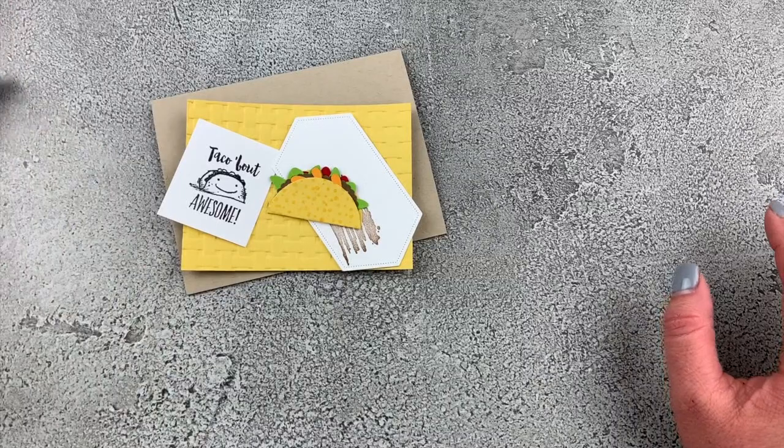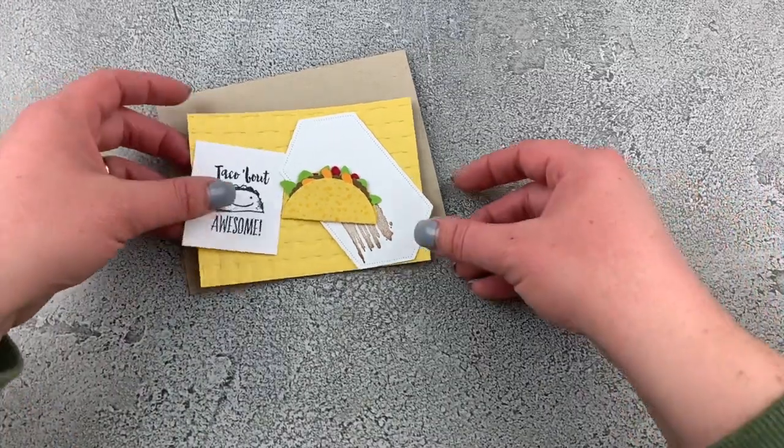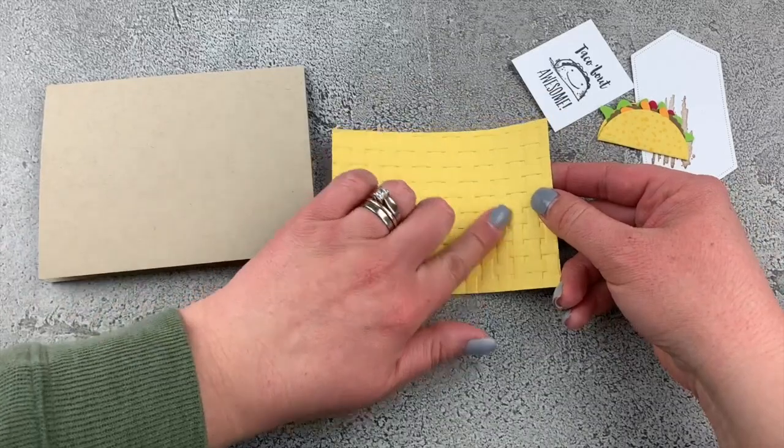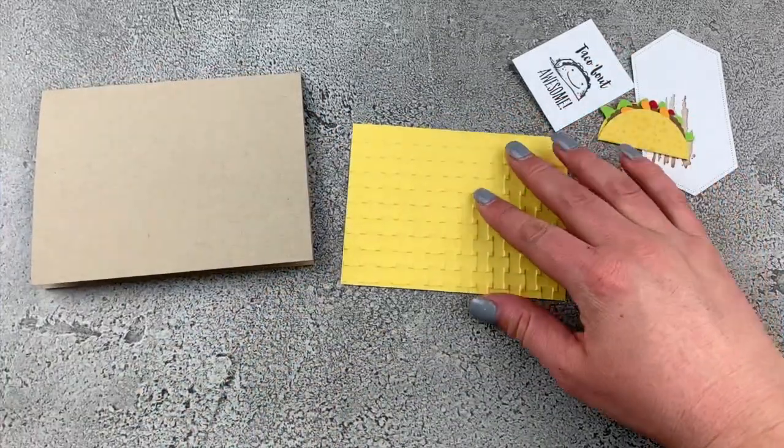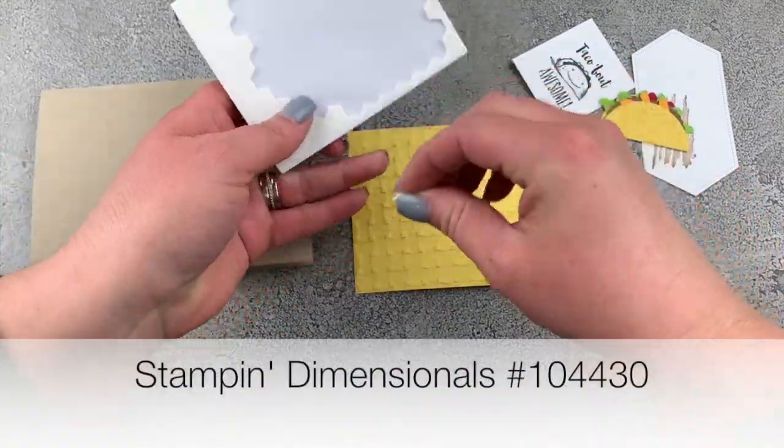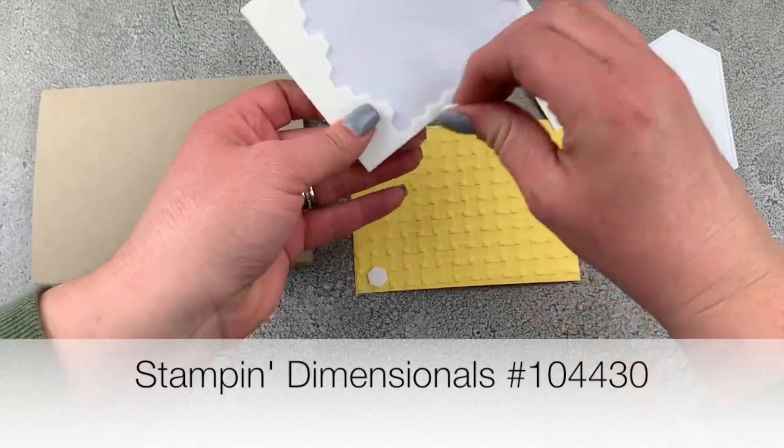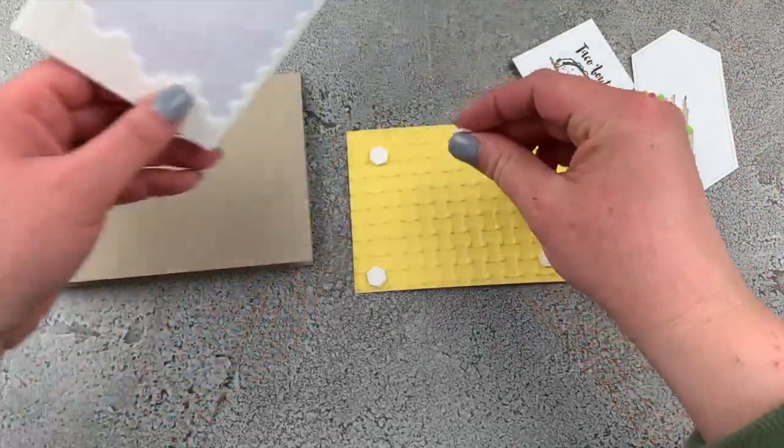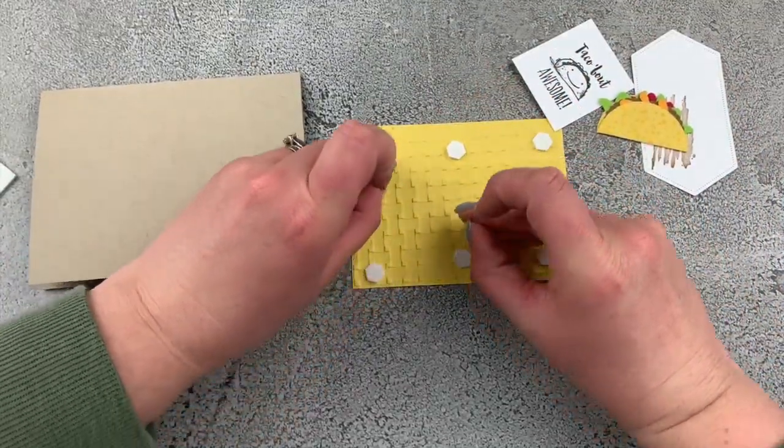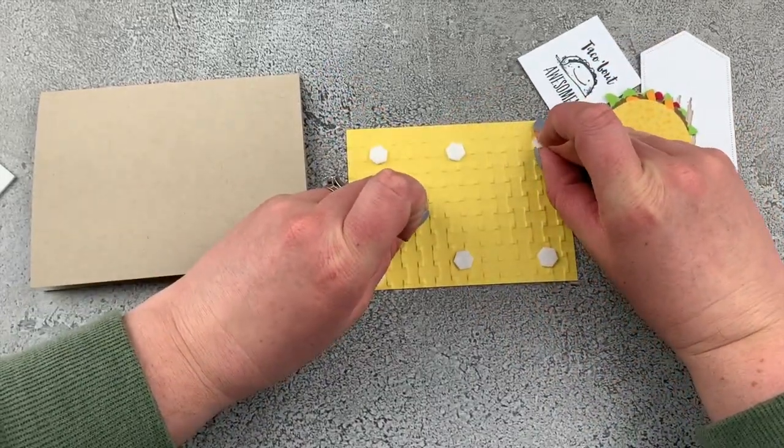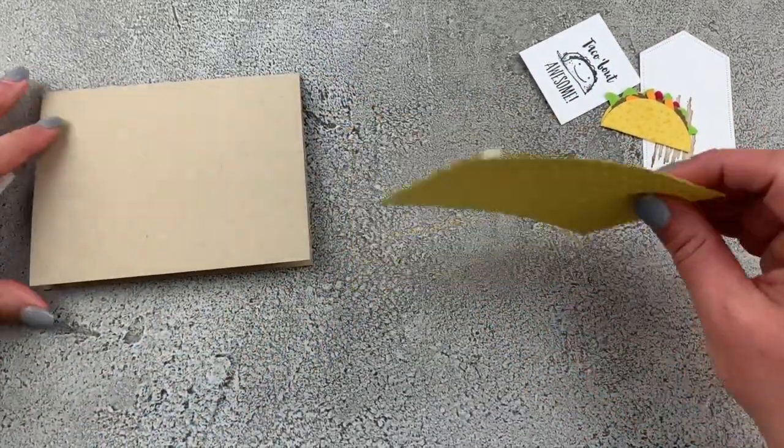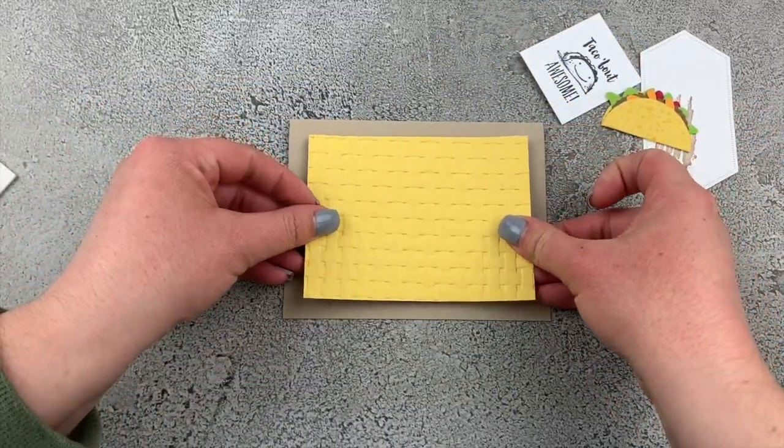Now we have all the pieces of our card and we're going to assemble. I want to take this piece that we embossed with the basket weave embossing folder, and I'm going to add some dimensionals to the backside. There we go. We'll put that onto our card front.